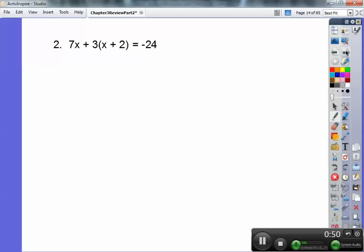Let's try another, number 2. On this one you have 7x plus 3 times the quantity x plus 2 equals negative 24. We've got to distribute that 3 through. I just did 3 times x is 3x and then 3 times that 2 is 6. People forget to do the 3 times 2 also. So I distributed the 3 through and now I'm going to combine like terms. 7x plus 3x is 10x. 10x plus 6 equals negative 24.